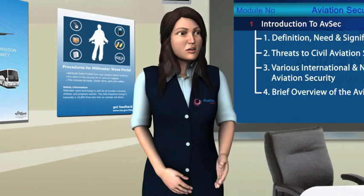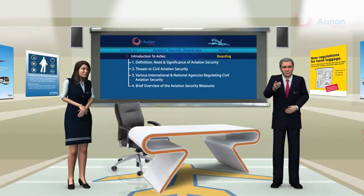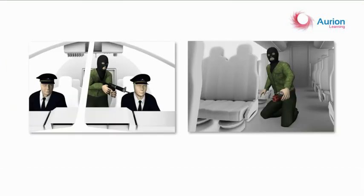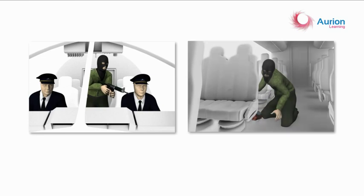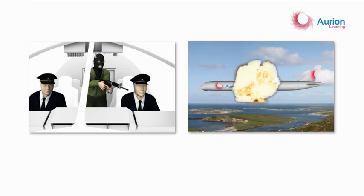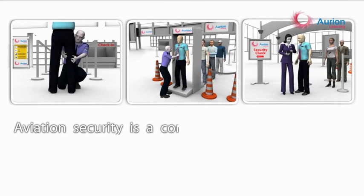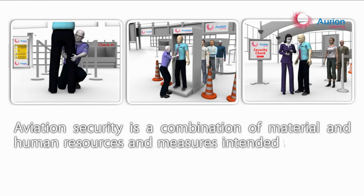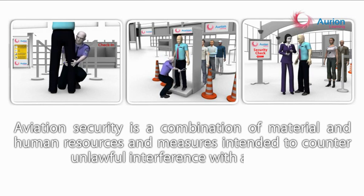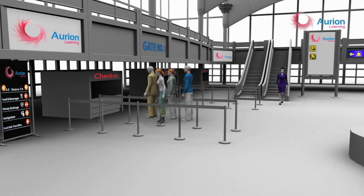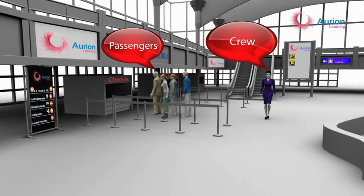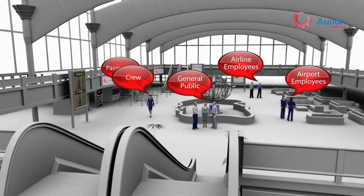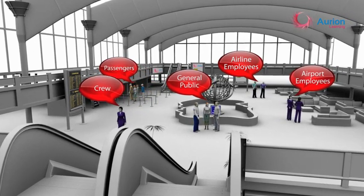Professor, what exactly is Civil Aviation Security? Aviation Security is the application of measures to ensure that such events do not occur. The technical definition is: Aviation Security is the application of material and human resources and measures intended to counter unlawful interference with aviation. It is aimed at protecting the passengers, crew, airport employees, airline employees and the general public from any form of unlawful interference.